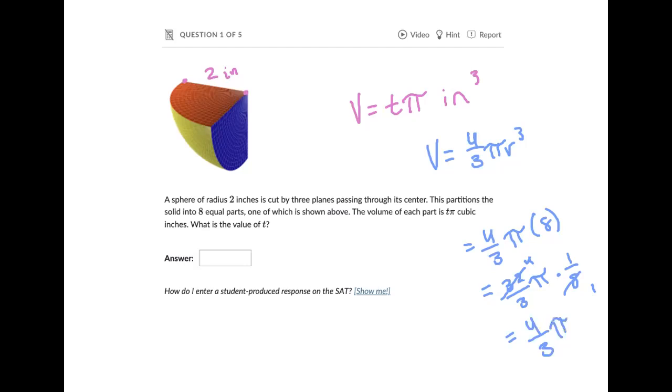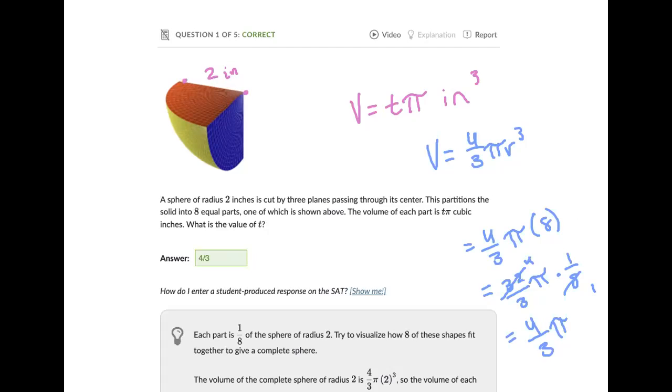So in this case they already gave us the pi, right? They said the volume is, I'm sorry, is t pi. And so here four-thirds is what t is going to be equal to. So let's go ahead and type that in. There we go, excellent.